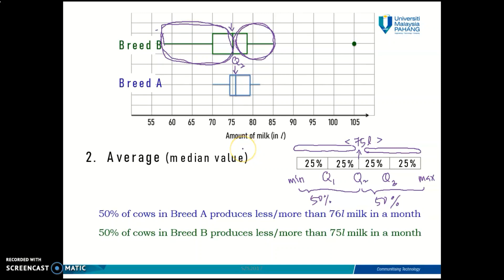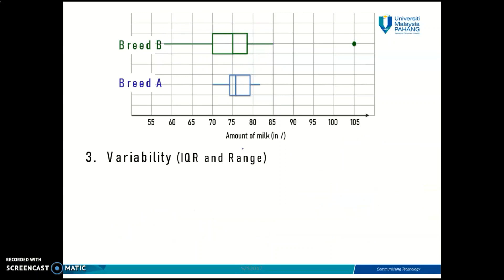So let's move on to the last interpretation using boxplot which is variability. You can also use boxplot to compare the variability of more than two sets. Given that you have plotted all these sets on the same axis, you can compare their variability.